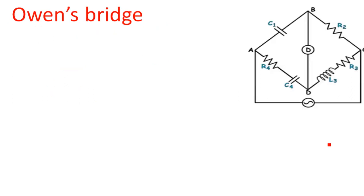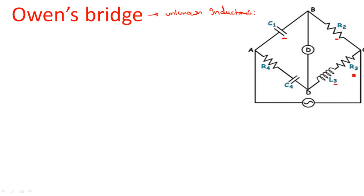Our next special bridge is Owen's bridge, which is also used to calculate unknown inductance. The bridge has four arms: the first arm has capacitance C1, the second arm has resistance R2, the third arm has a series combination of resistance and inductance (R3 is the leakage resistance of L3), and the fourth arm has a series combination of resistance and capacitance. The supply voltage is VS, and when the bridge is in balanced condition we apply the balance equation.